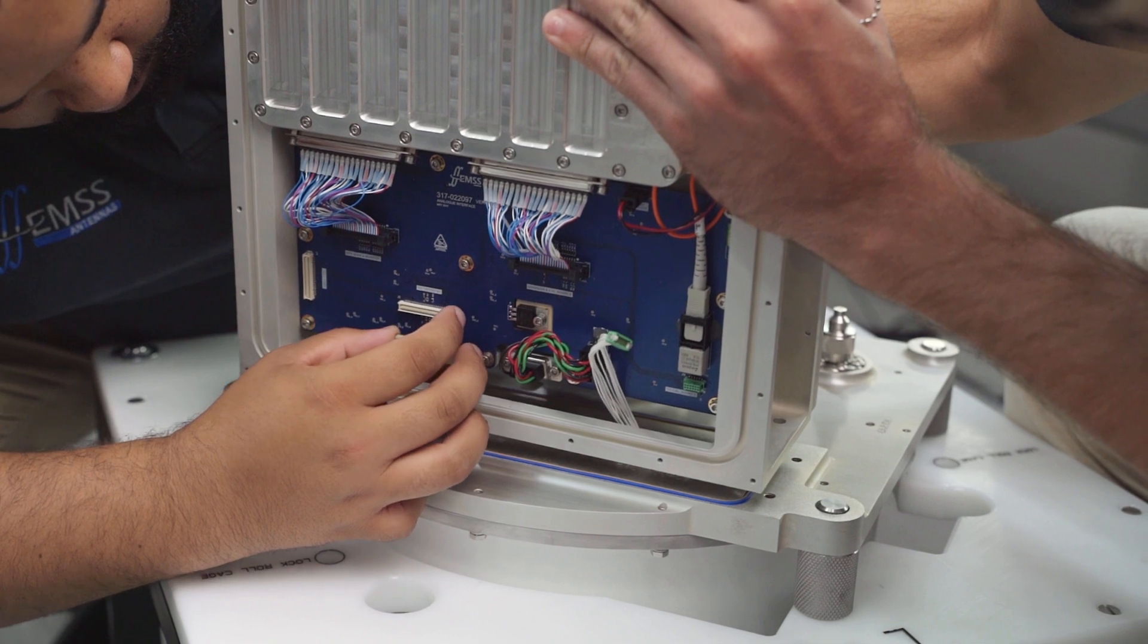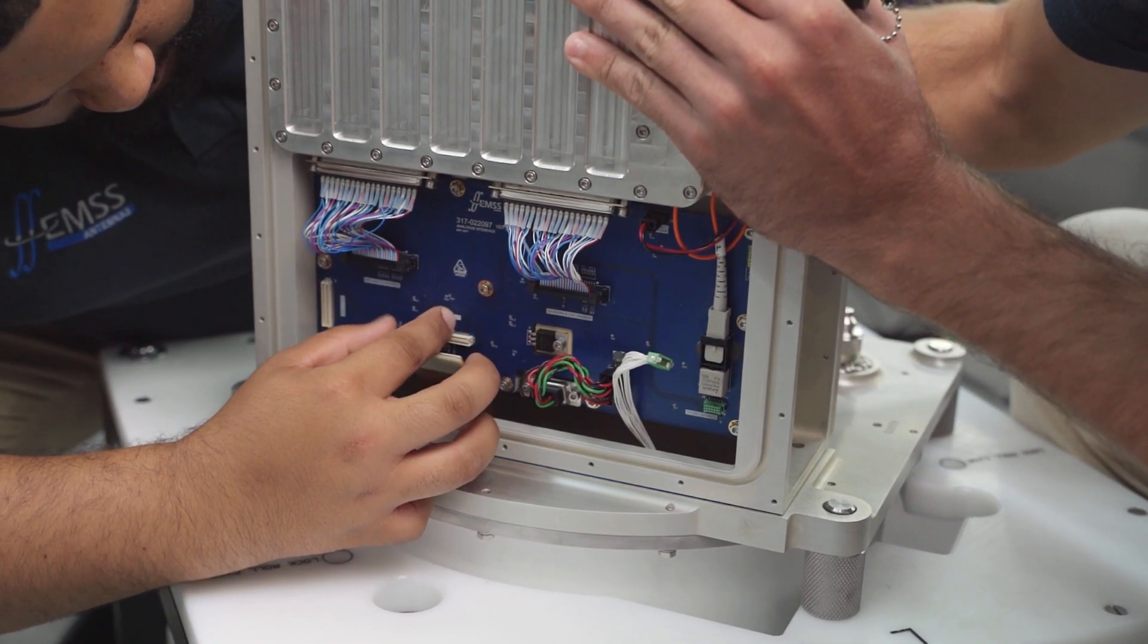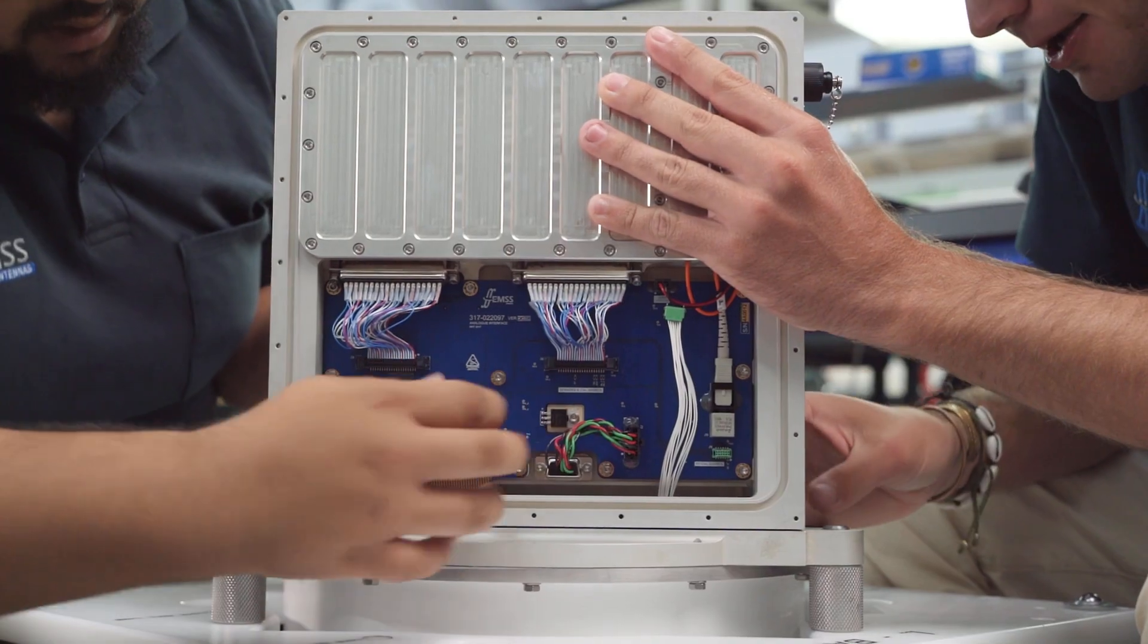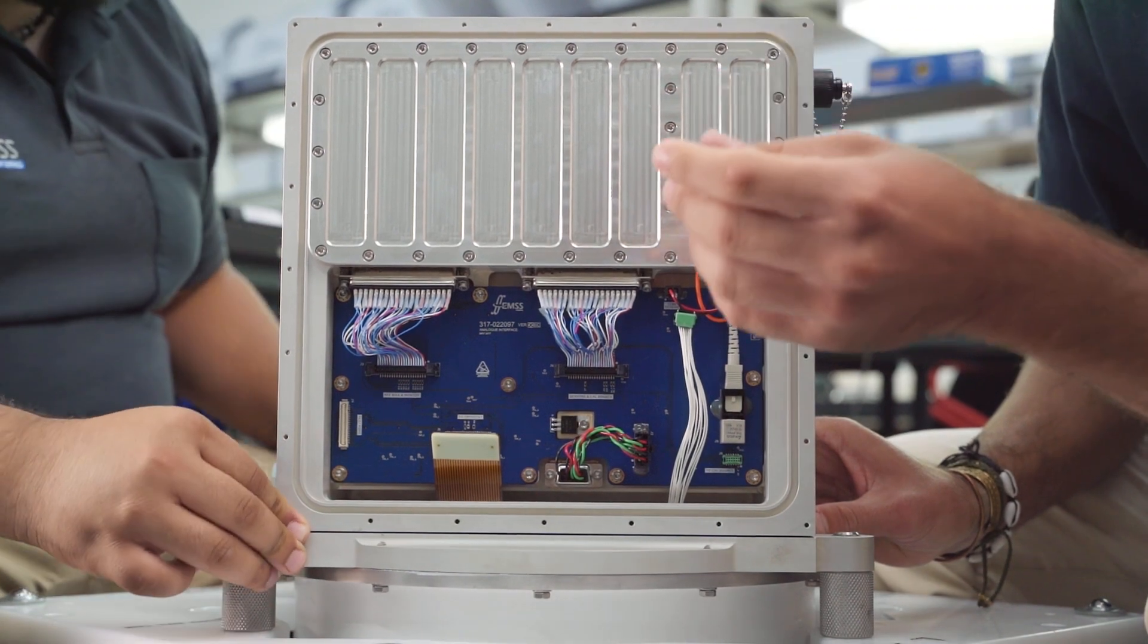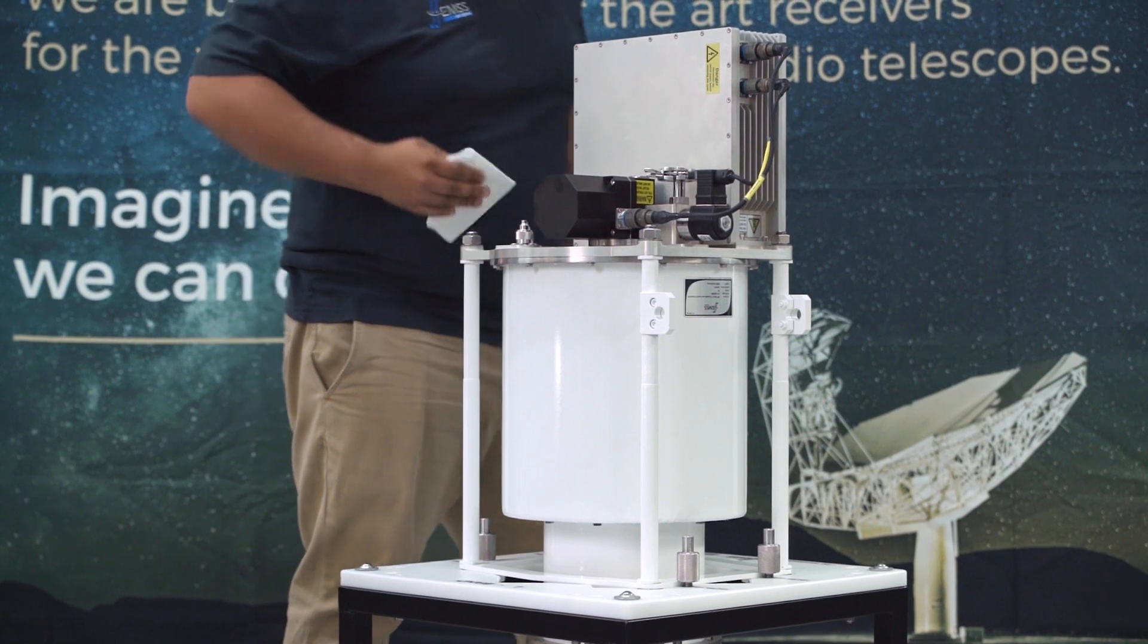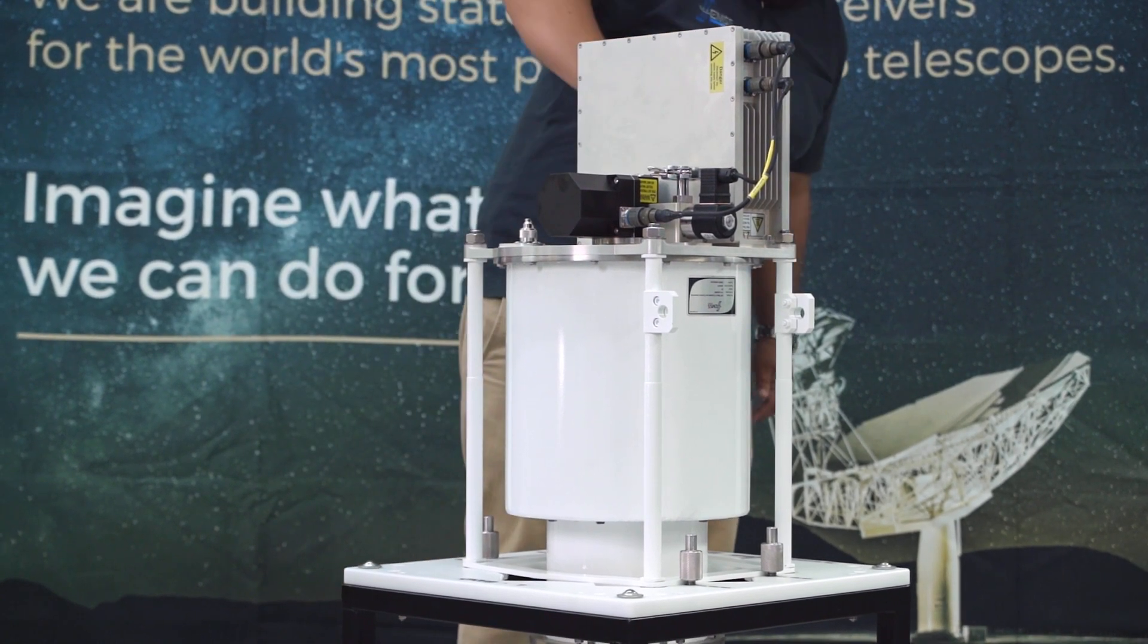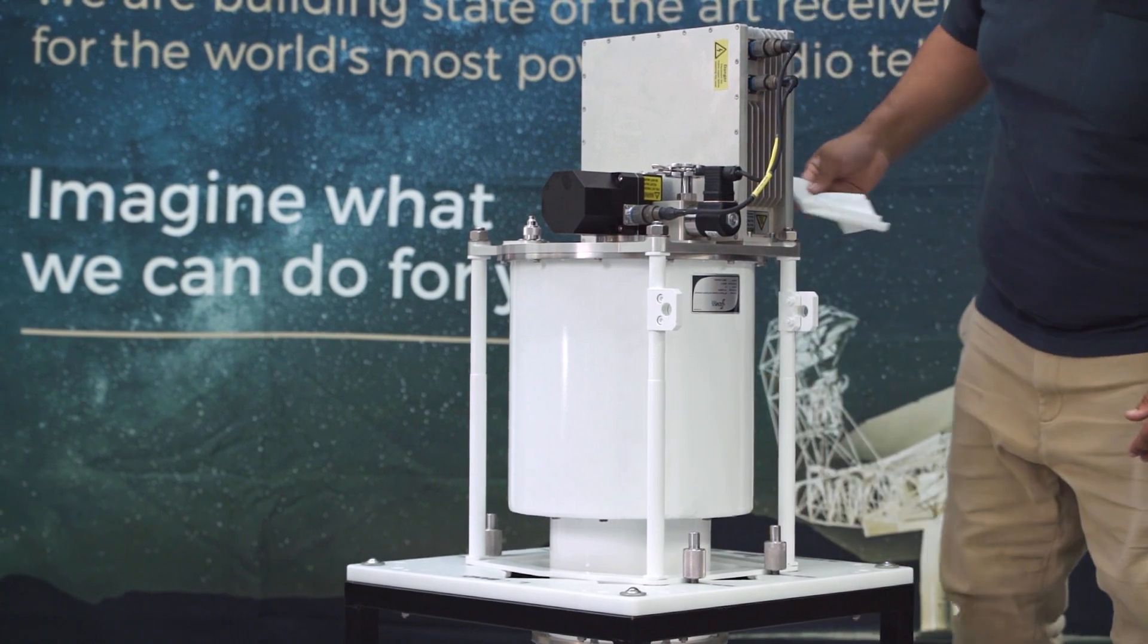Another very important component is the feed package controller. This is an FPGA based data acquisition and control system that implements the low level functions required for executing the commands received from the system controller. It is also the power supply for the receiver. It was designed to generate no RF signals that can interfere with the astronomy signals.